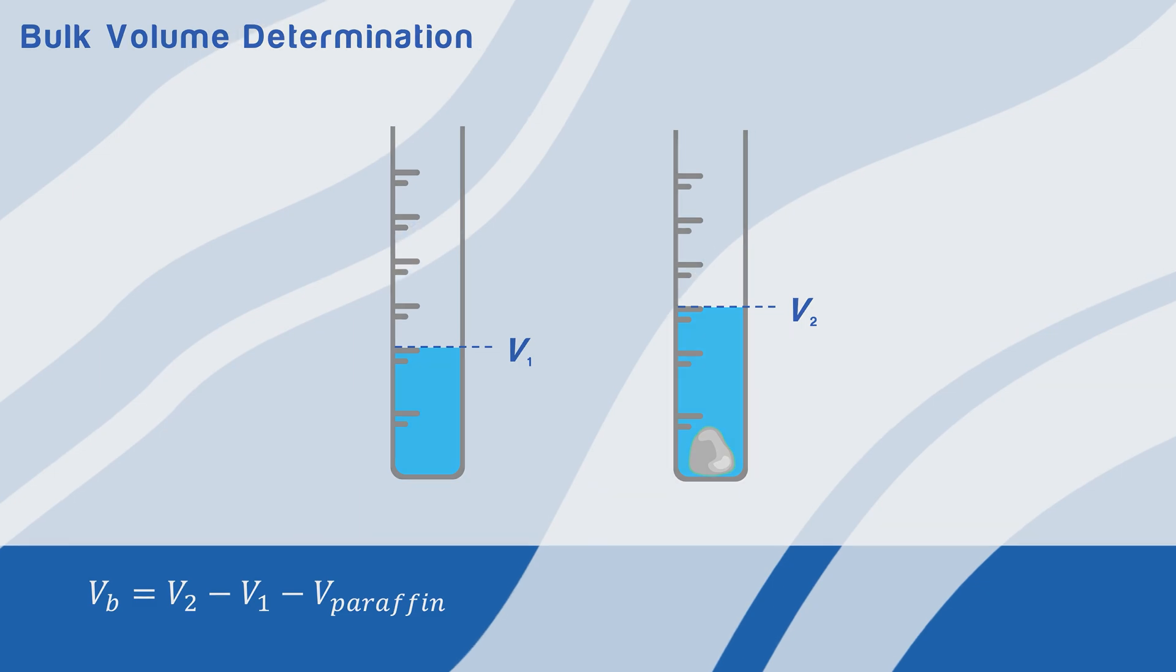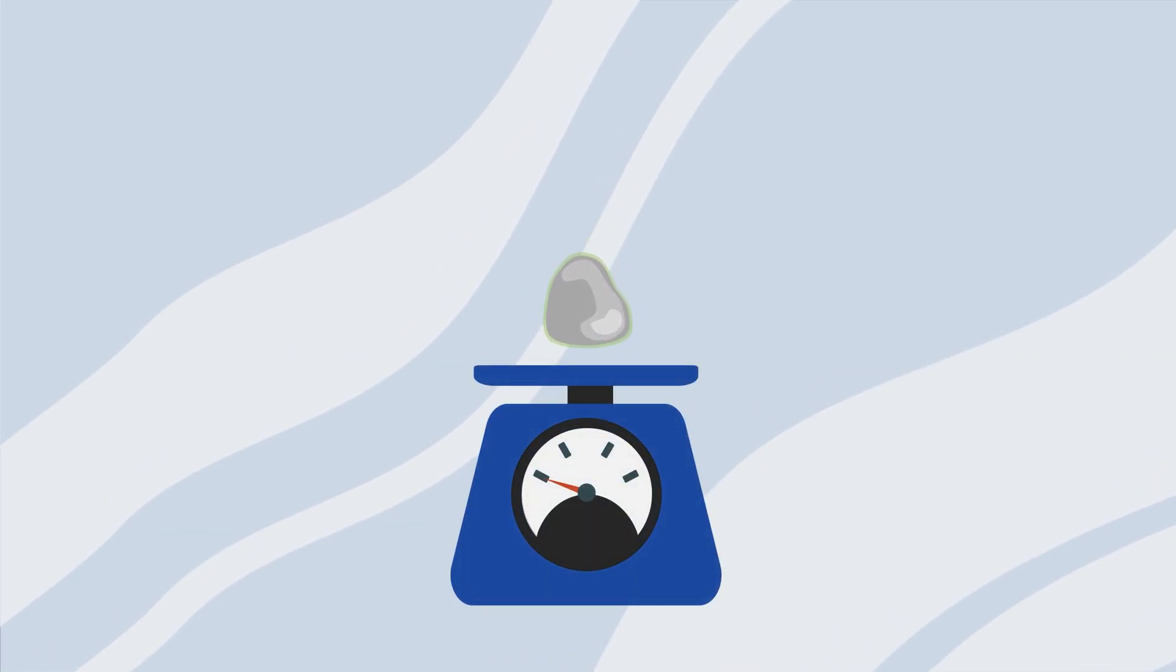In the second method, we will use Archimedes' principle to find the bulk volume. First, we need to weigh the coated sample, which we will refer to as the real weight of the sample.